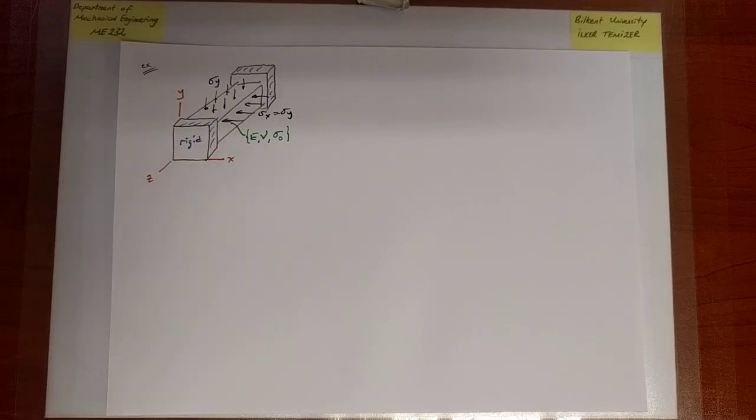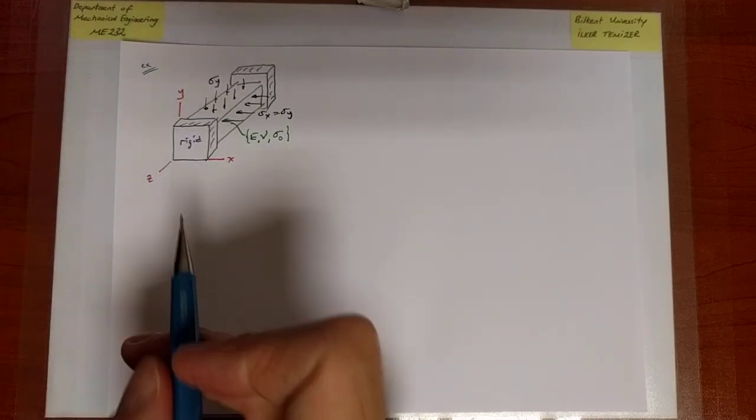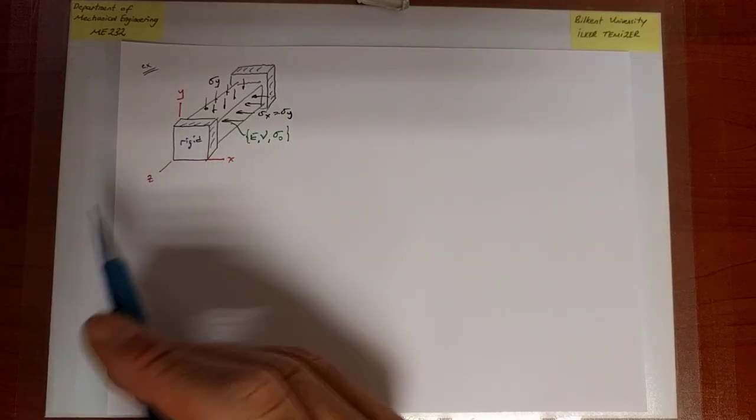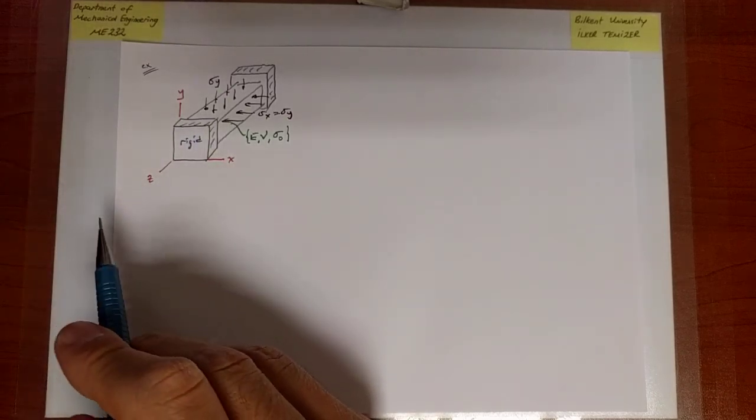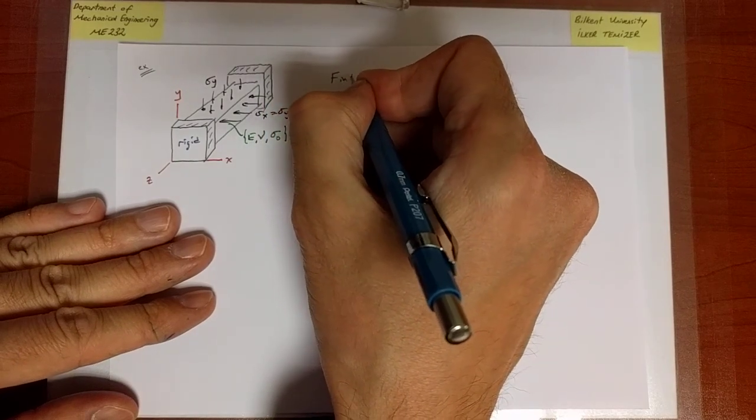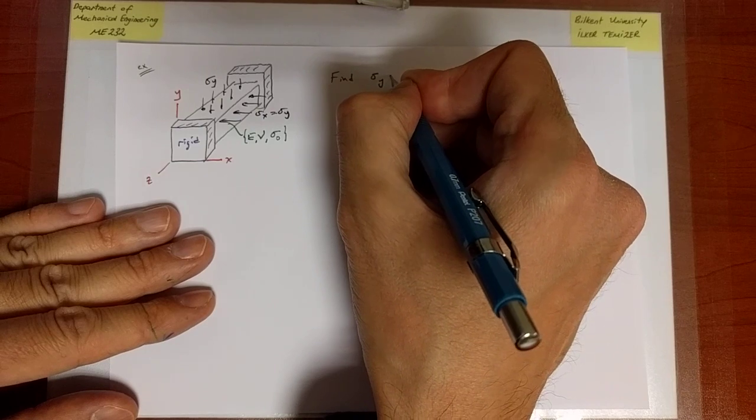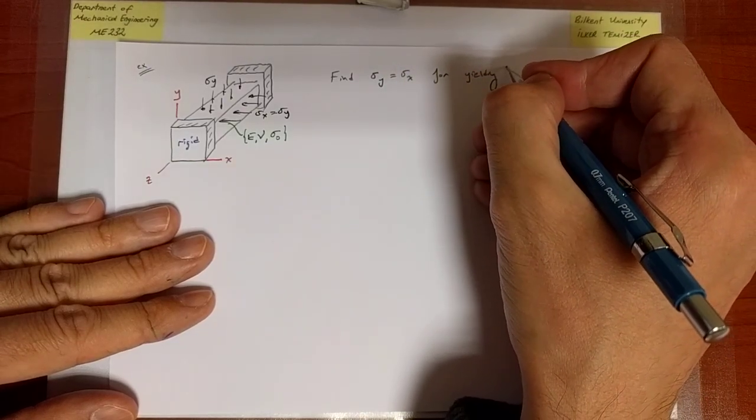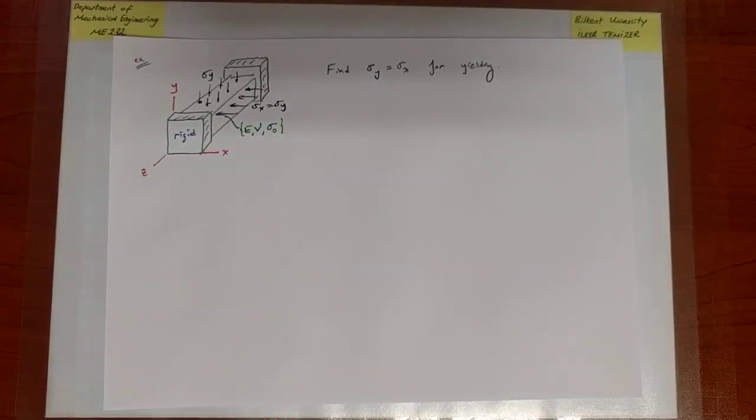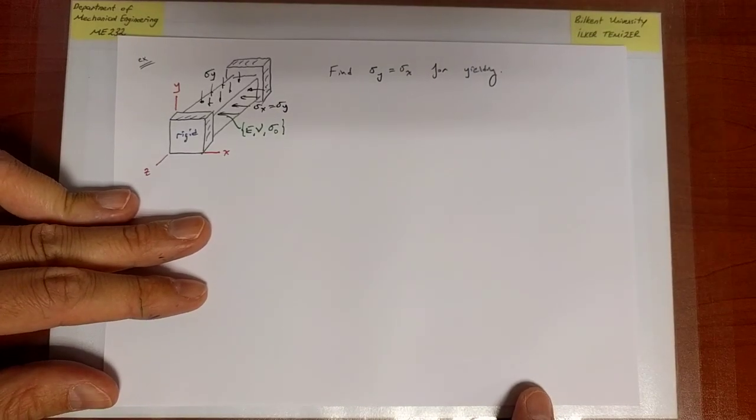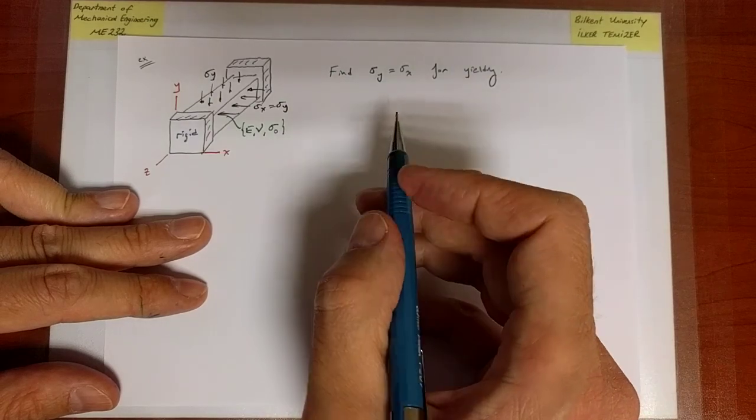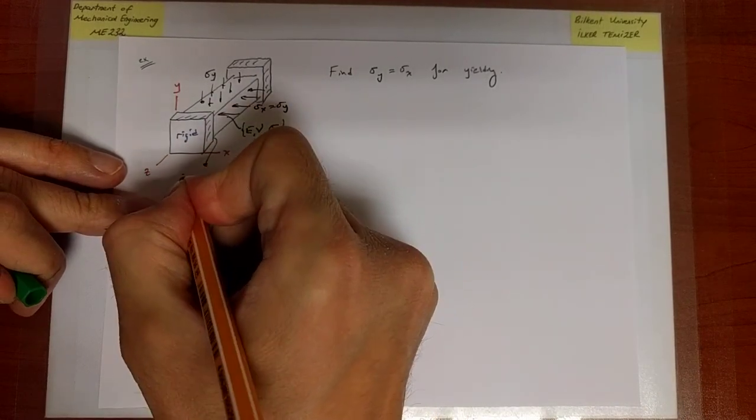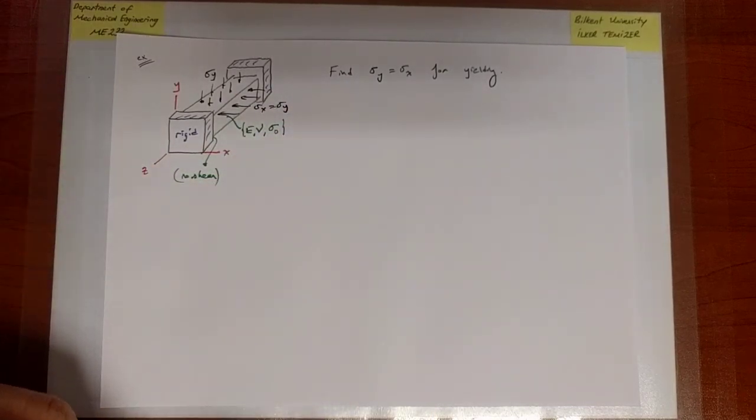The question is, in this scenario, as we've done earlier in similar generalized loading scenarios, we're going to omit that there is no friction, so we're not going to have to worry about shear stresses. The question is, find sigma_y, which equals sigma_x, for yielding. We would like to find sigma_y as a function of sigma_0. This is a case with the principal stresses being equal to the normal stresses along the x, y, z direction because there is no shear stress. No shear due to frictionless supports.